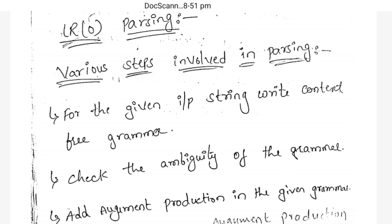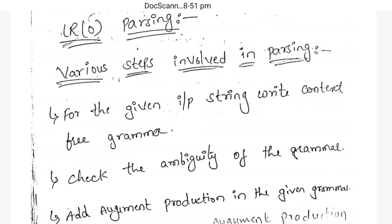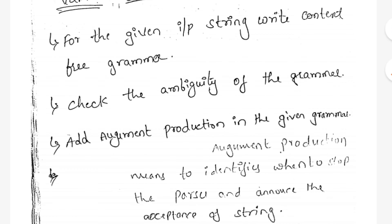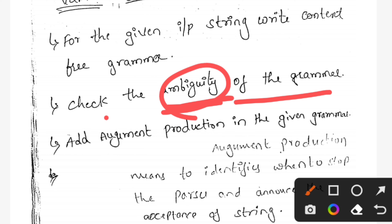The first step is: for the given input string, write the context free grammar. The second step is to check the ambiguity of the grammar. Ambiguity means generating more than one parse tree. Check whether there is ambiguity or not.